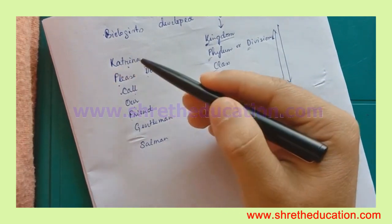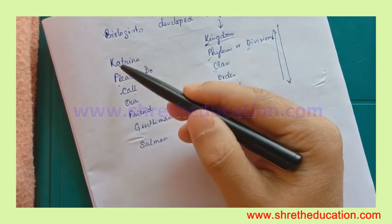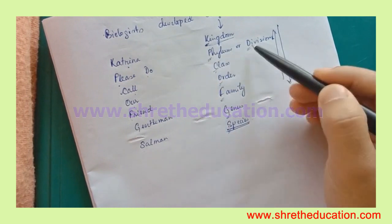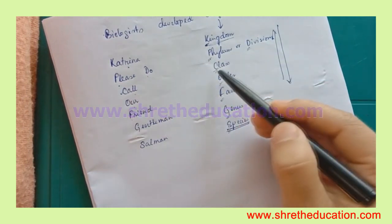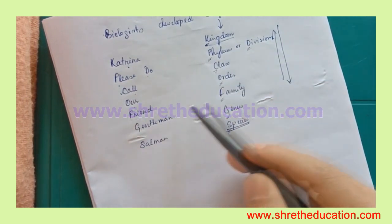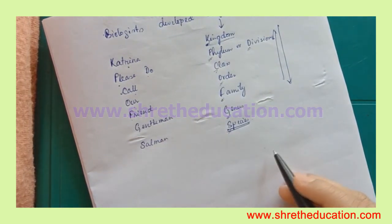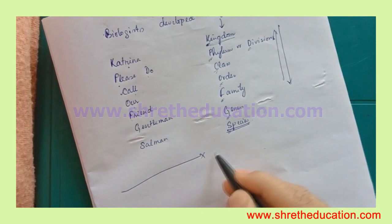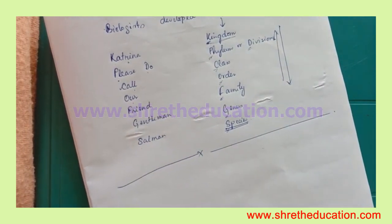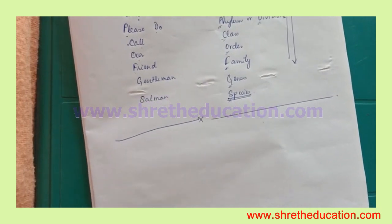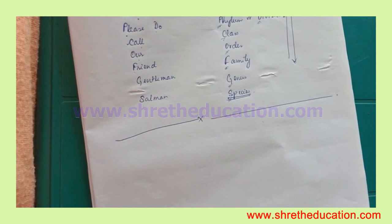Thank you for following along. To recap: kingdom, phylum, division, class, order, family, genus, species — that is the full taxonomic hierarchy. This is the taxonomic category and its hierarchical arrangement.